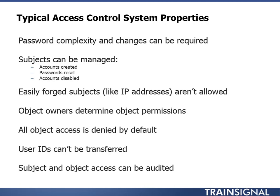In the IT world, a typical access control system has properties like these. You can control the strength of authentication by controlling password complexity and how often users can change passwords. You can also manage your subjects — your users — by creating accounts, resetting passwords, and disabling accounts. Typically you won't allow the authentication system to allow easily forged subjects. That's why driver's licenses are made pretty hard to forge — they put holographic images on there and electronic elements that can be scanned, things you can't make on a bubble-jet printer at home.